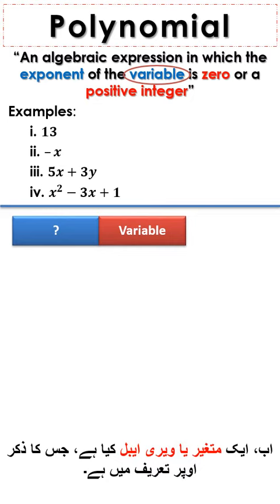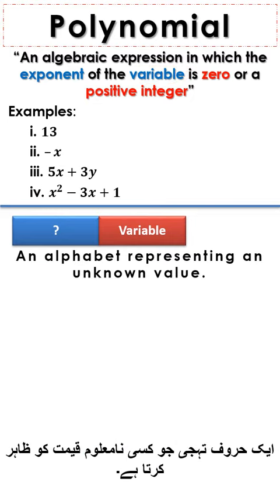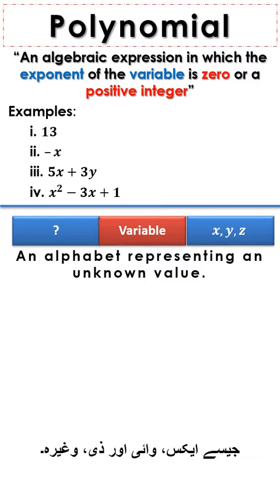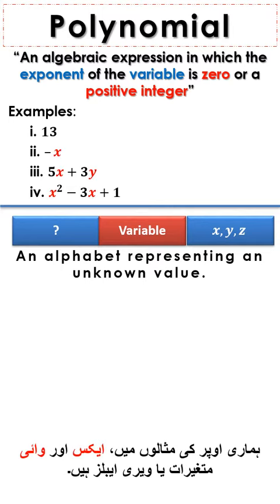What is a variable? As mentioned in definition above, an alphabet representing an unknown value like x, y, and z, etc. In our examples above, x and y are the variables.